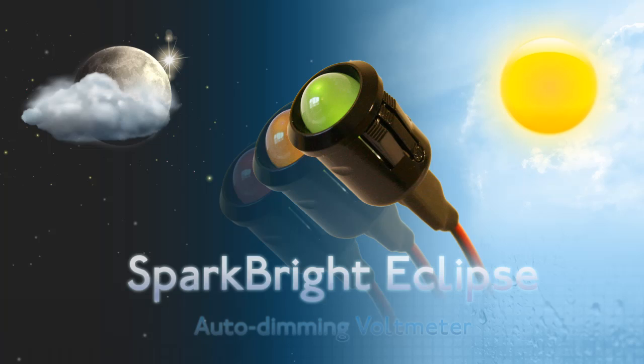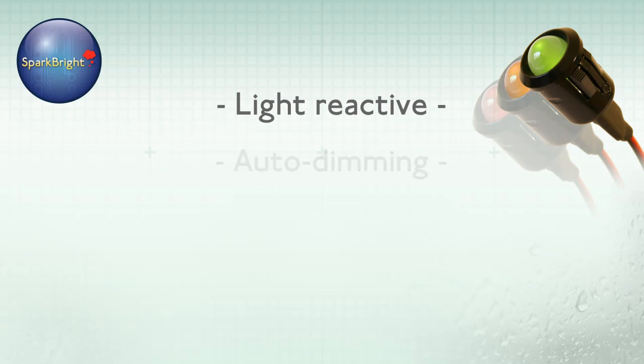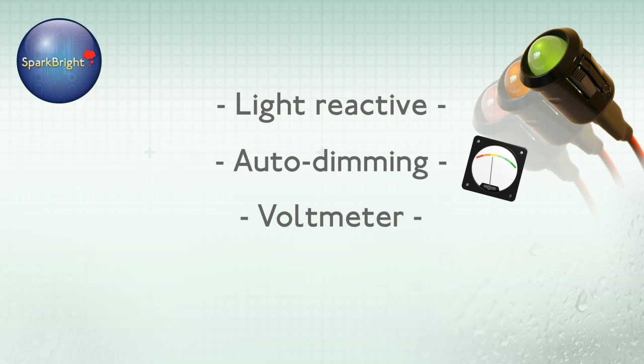This is the brand new Sparkrite Eclipse. It's a light reactive auto dimming LED voltmeter designed for use in motorcycles,